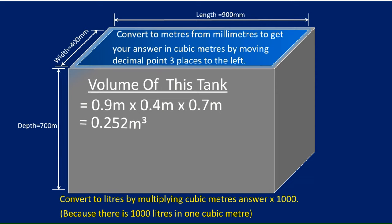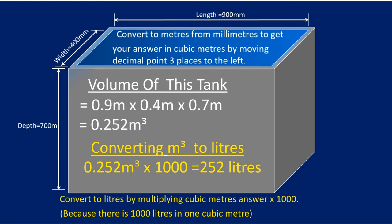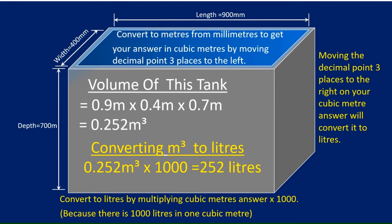If you want to convert that into liters, you basically multiply your cubic meter answer by 1000, because there's 1000 liters in every cubic meter. Alternatively, you can take your cubic meter answer and just move the decimal point three places to the right, and that will give you your answer in liters converted from cubic meters.